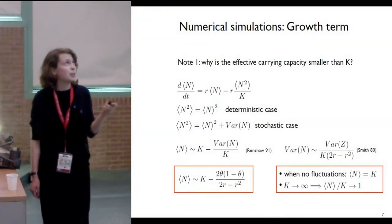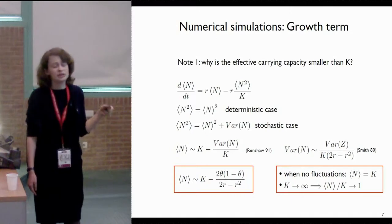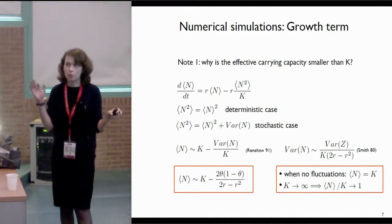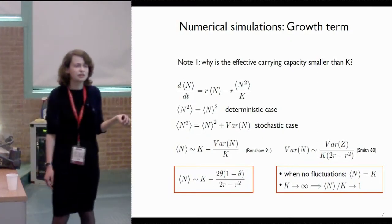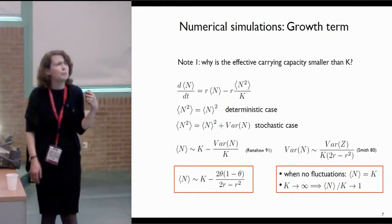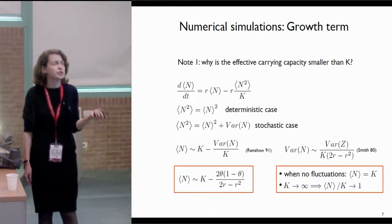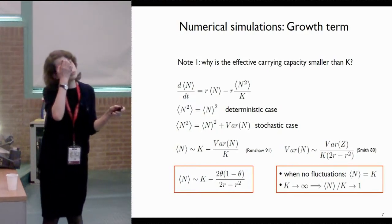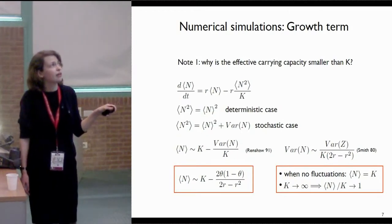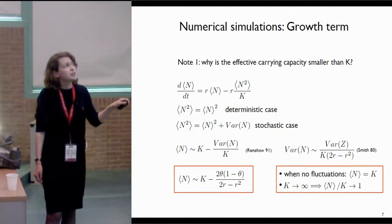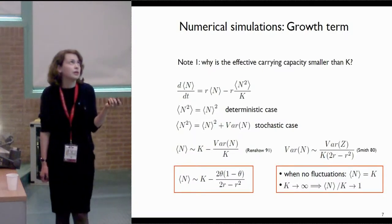In order to explain the dependence on carrying capacity and the turnover rate, we find an approximation for the effective carrying capacity, and to do so we present the model as the deterministic logistic growth plus a noise term. An important value here is the variance of the noise, which for us is the sum of the variances of the growth process — a binomial process — and of the death process — also a binomial process. So here we have the two variances of the binomial processes.